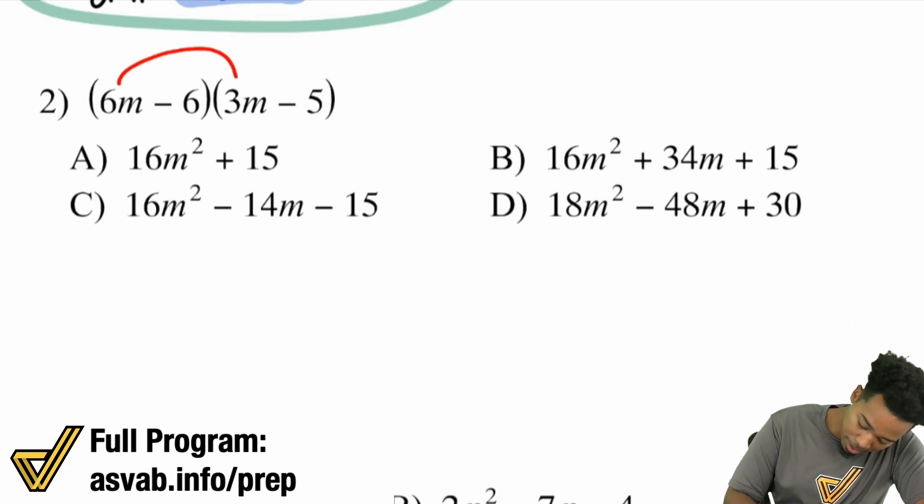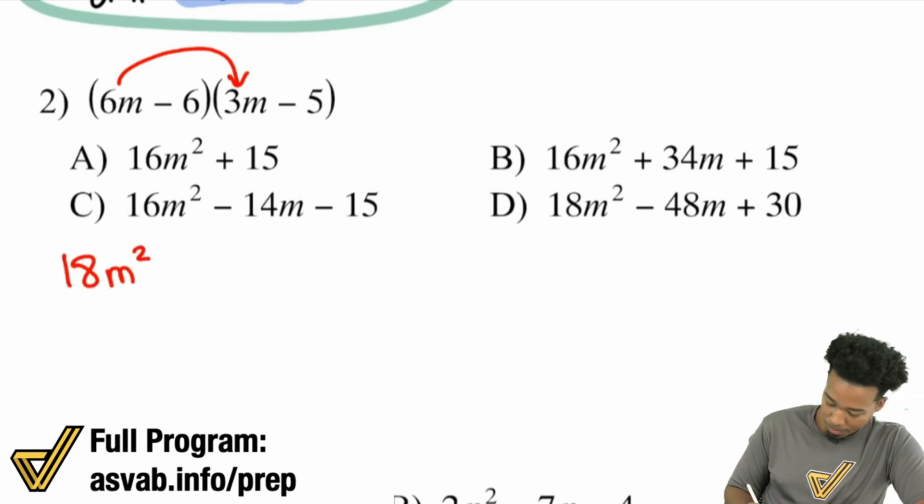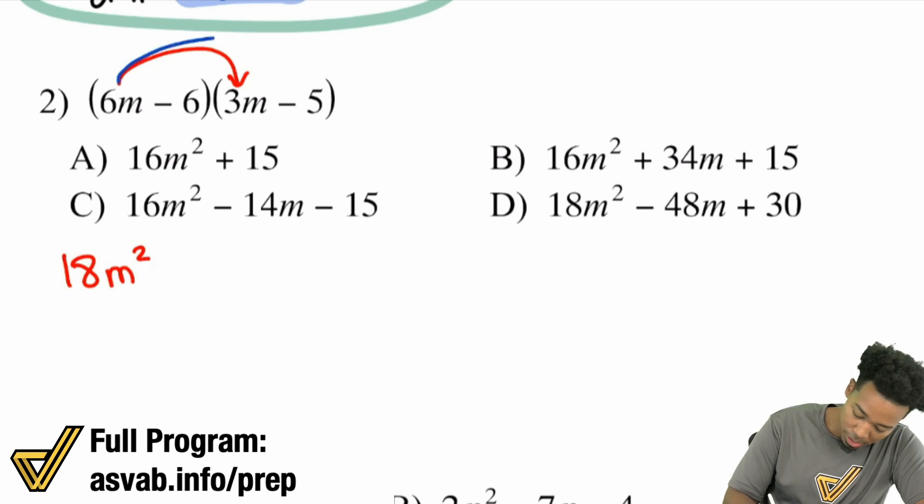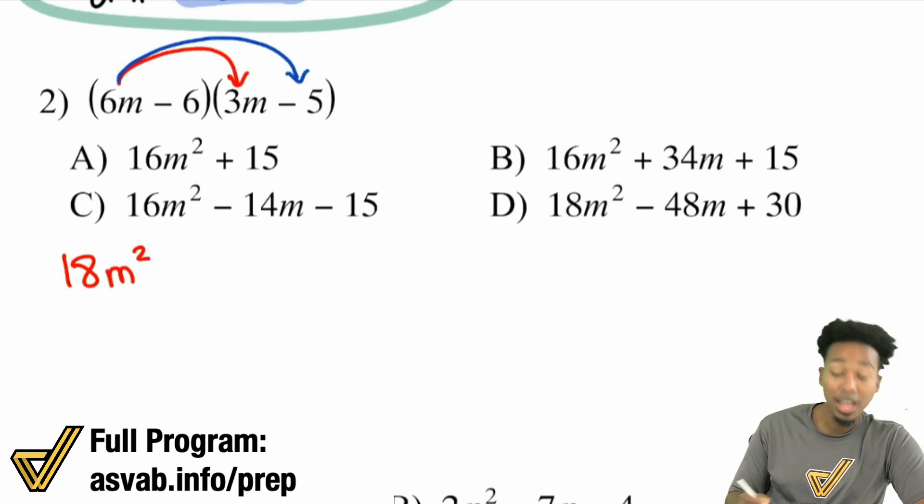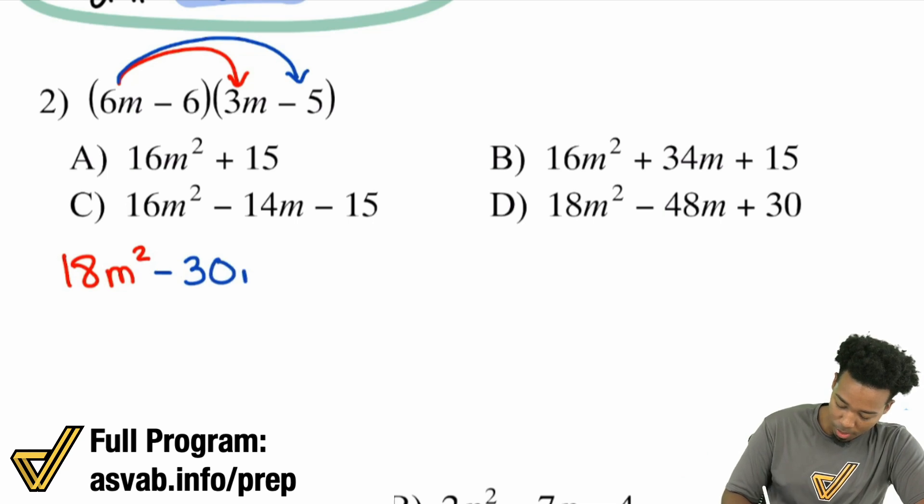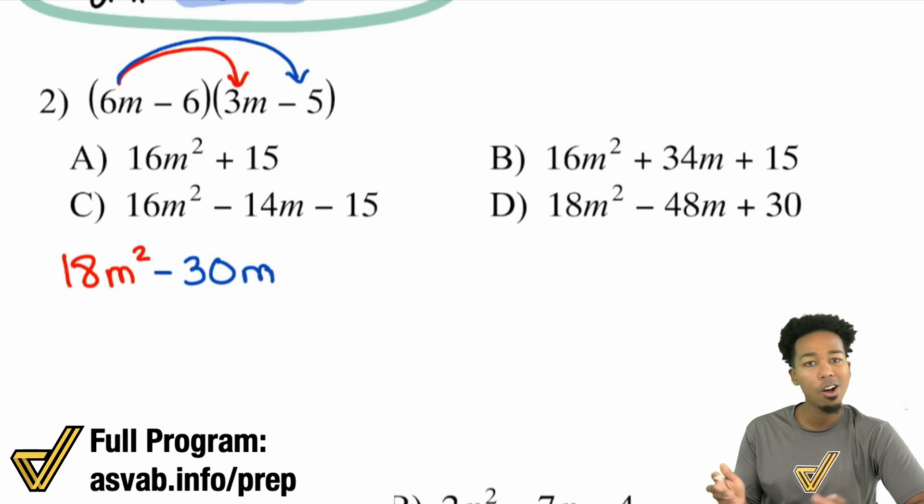Let's practice this one together and keep moving forward the right way. So starting off, 6M multiplies with 3M. 6 times 3 is 18. M times M is M squared. Next up, you still have to do the 6M with the negative 5. Negative times a positive is going to be a negative. 6 times 5 is 30. M times, well, there's nothing else there, so it's just going to be M.